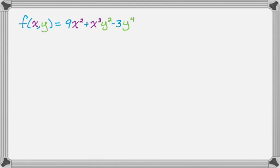So say we have f(x,y) equals 9x² plus x³y² minus 3y⁴. So we have one term here that only has x as a variable, we have one term that has both x's and y's, and then we have a last term that has only y's as variables. And that's going to be really important.